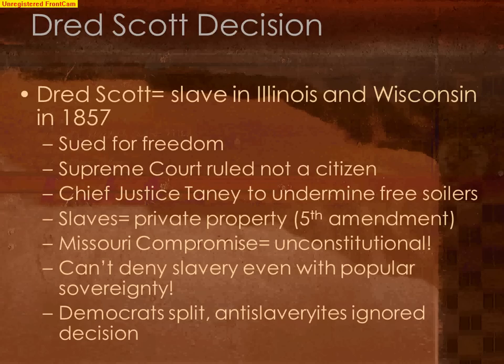Taney had been watching what was unfolding in Kansas with popular sovereignty, and he wanted to undermine the free soil cause. In his opinion of the court, Justice Taney said that first and foremost, Dred Scott had no standing in the Supreme Court — he was not a citizen, therefore he had no right to sue. But Taney wanted to go a step further: he also said in his opinion that slaves are private property, and private property is specifically protected by the Fifth Amendment to the U.S. Constitution.